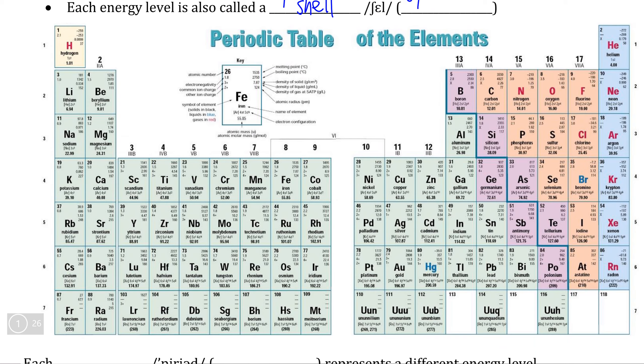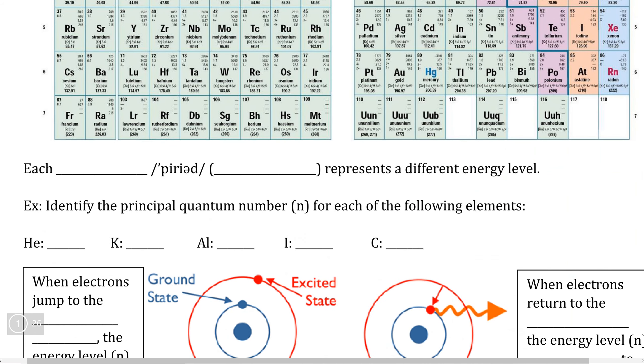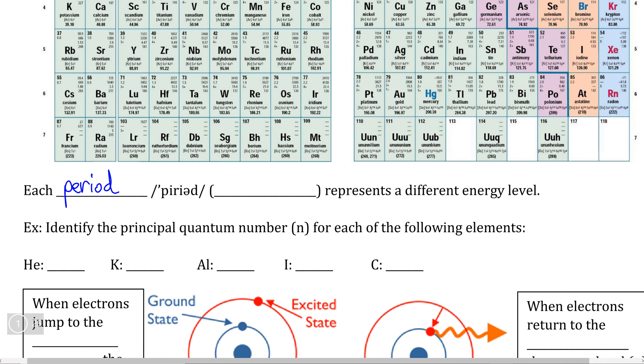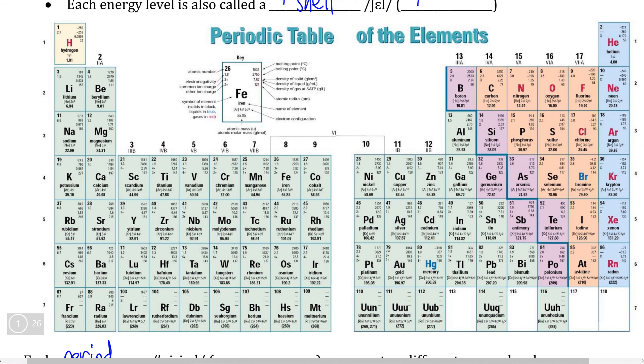We can actually see energy levels represented on the periodic table. The structure of the periodic table is not arranged accidentally. Each period, meaning each horizontal row, represents a different energy level. So for example, the first period, which just has hydrogen and helium, is energy level one. This means that n for energy level is equal to one.